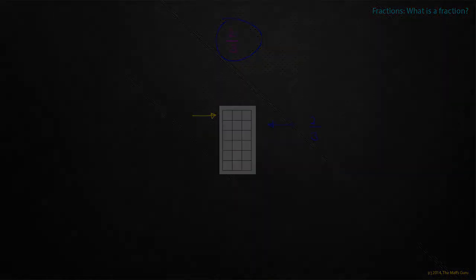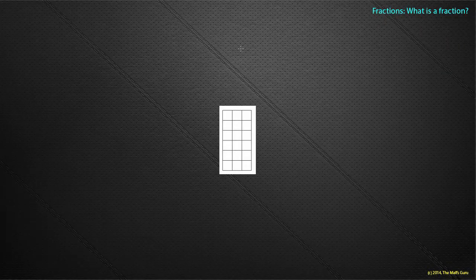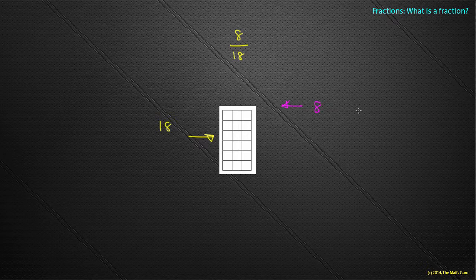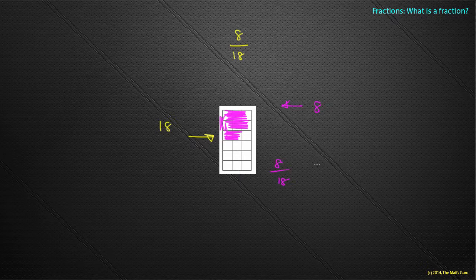One more example. What about if I want to shade in eight out of eighteen? How many squares are there altogether? There are eighteen squares. They might be trying to trick us, but we know we're going to colour in eight squares for every eighteen there are. So I count out groups and colour in the right number — and I have now coloured in eight out of eighteen.